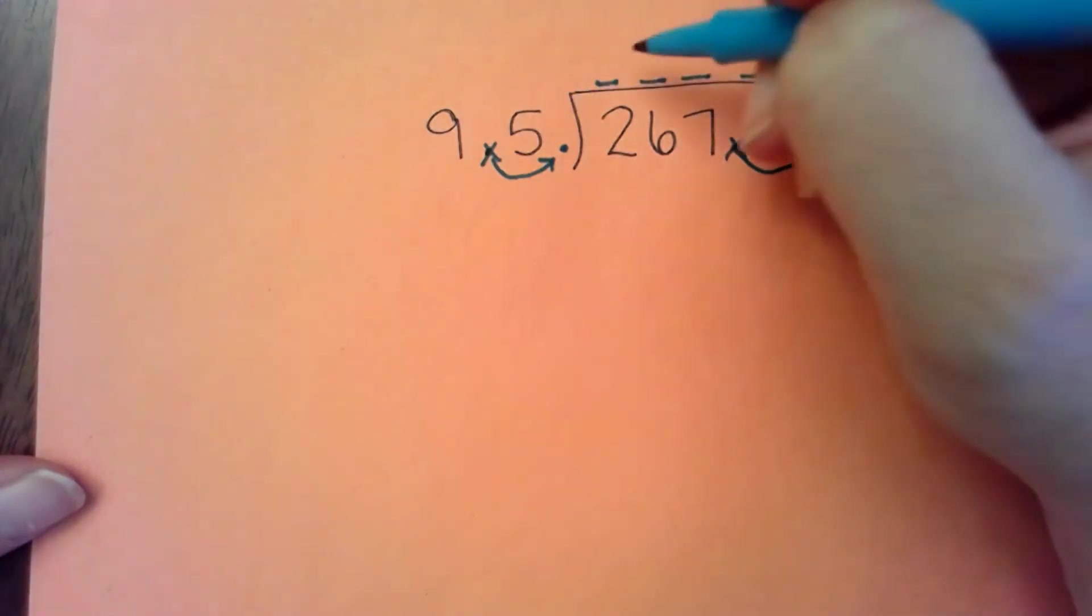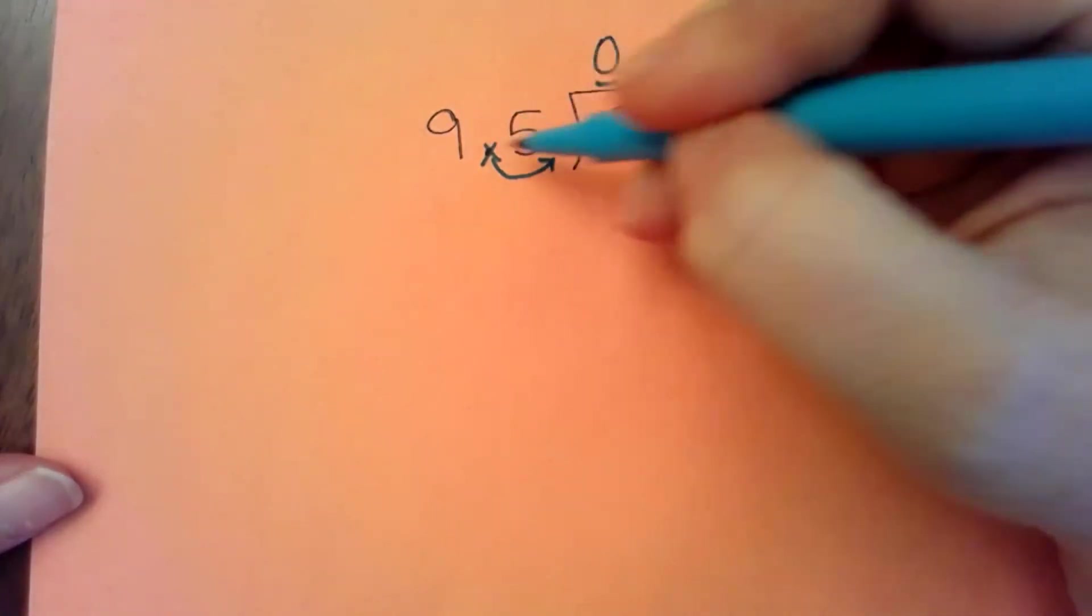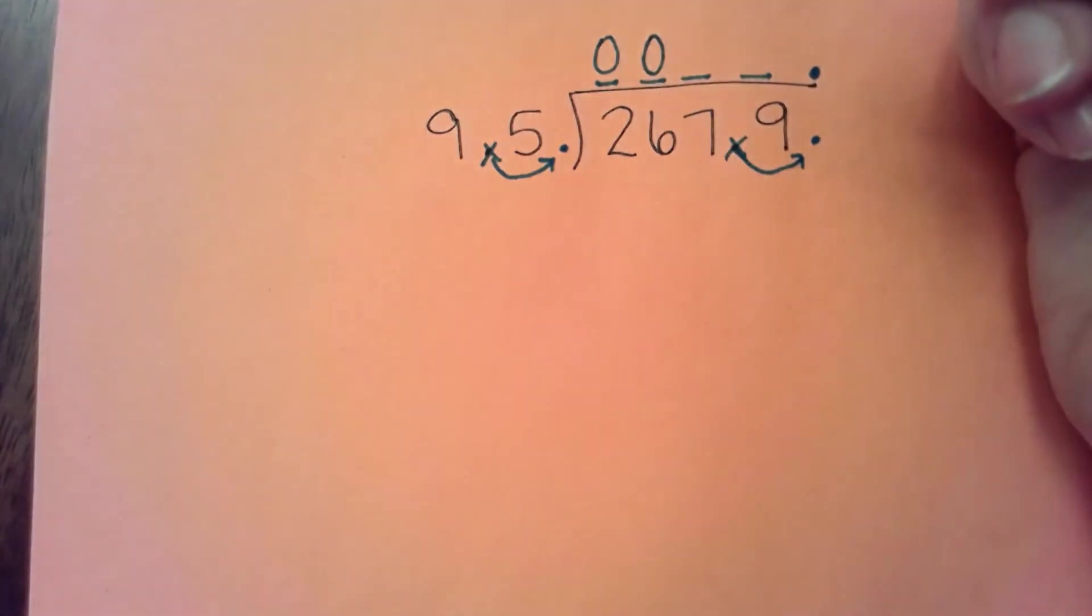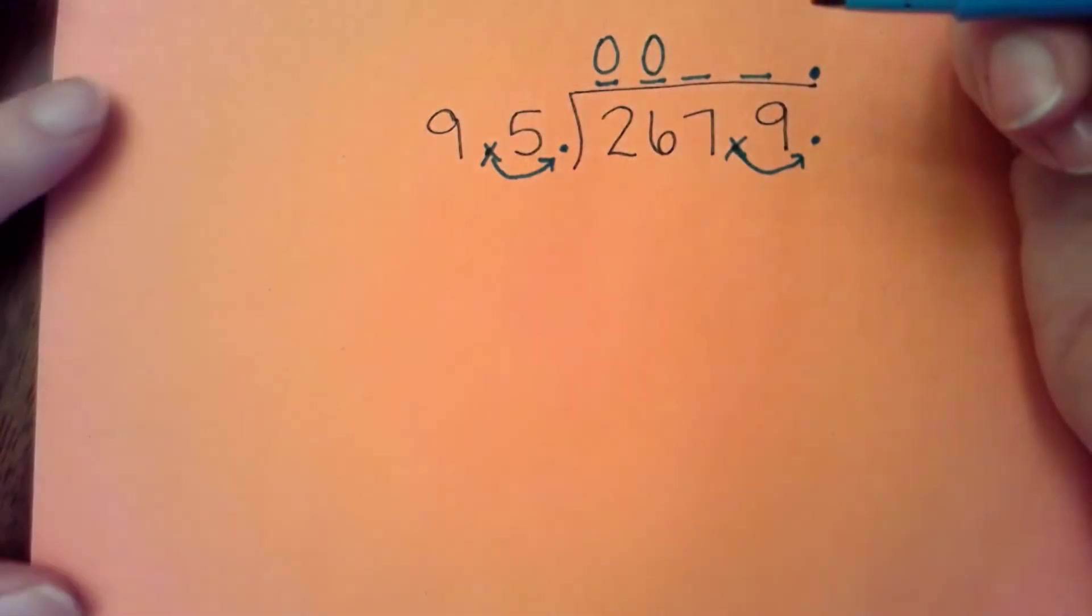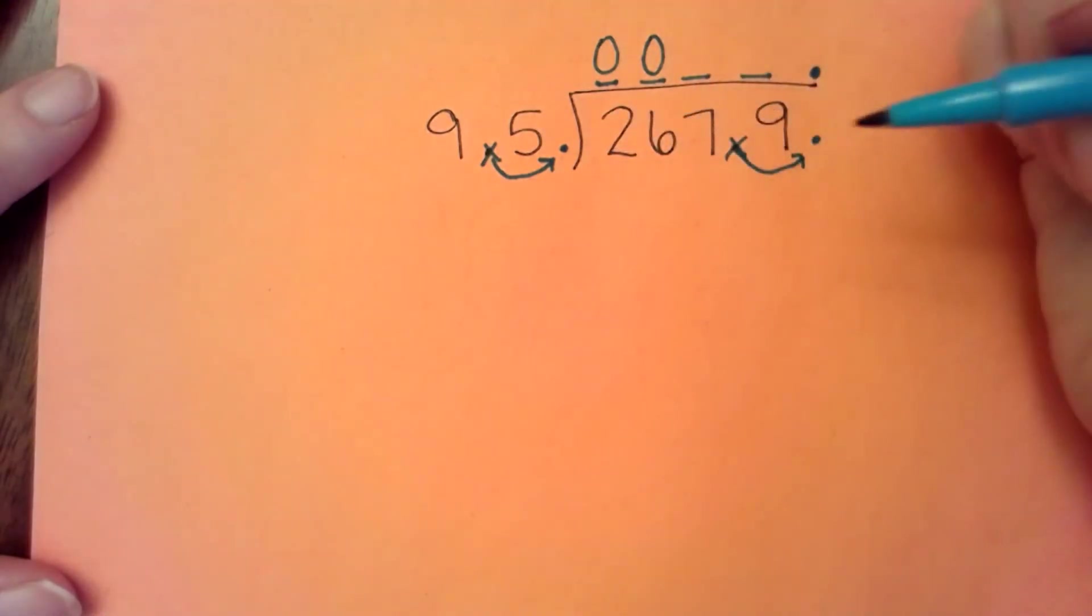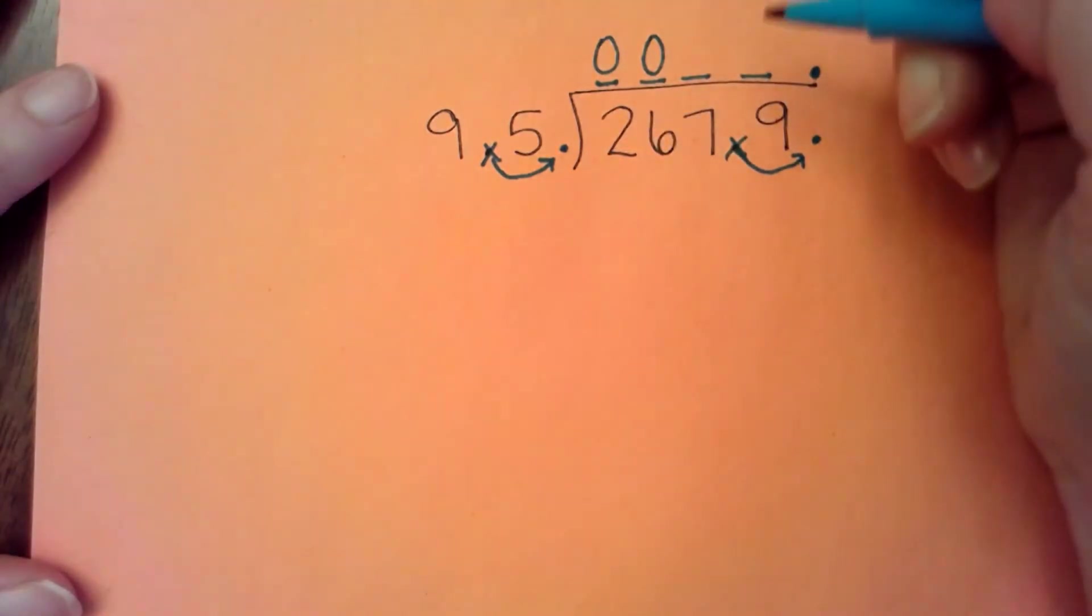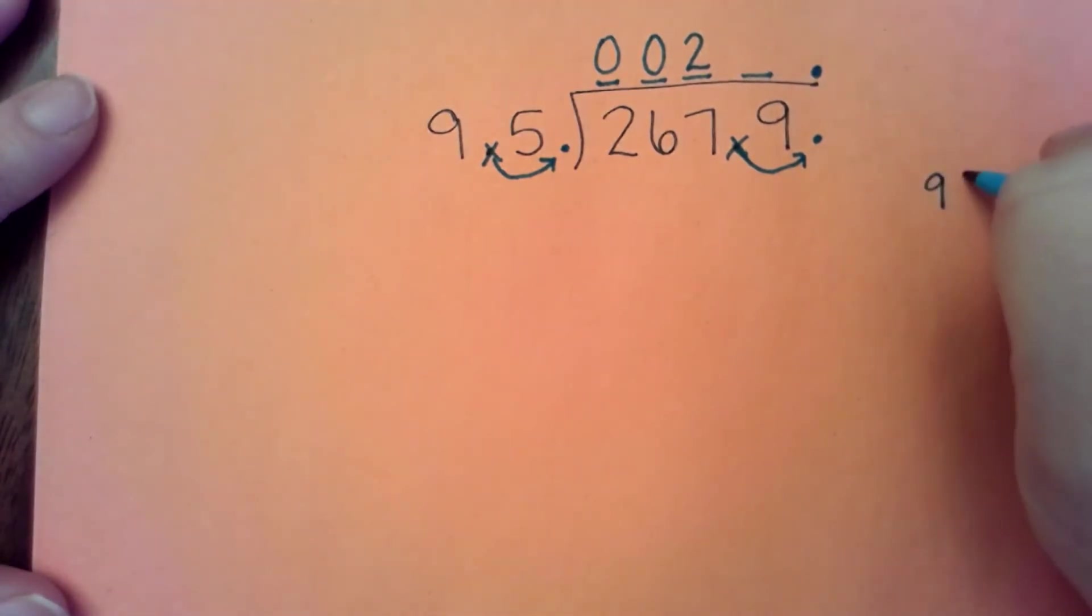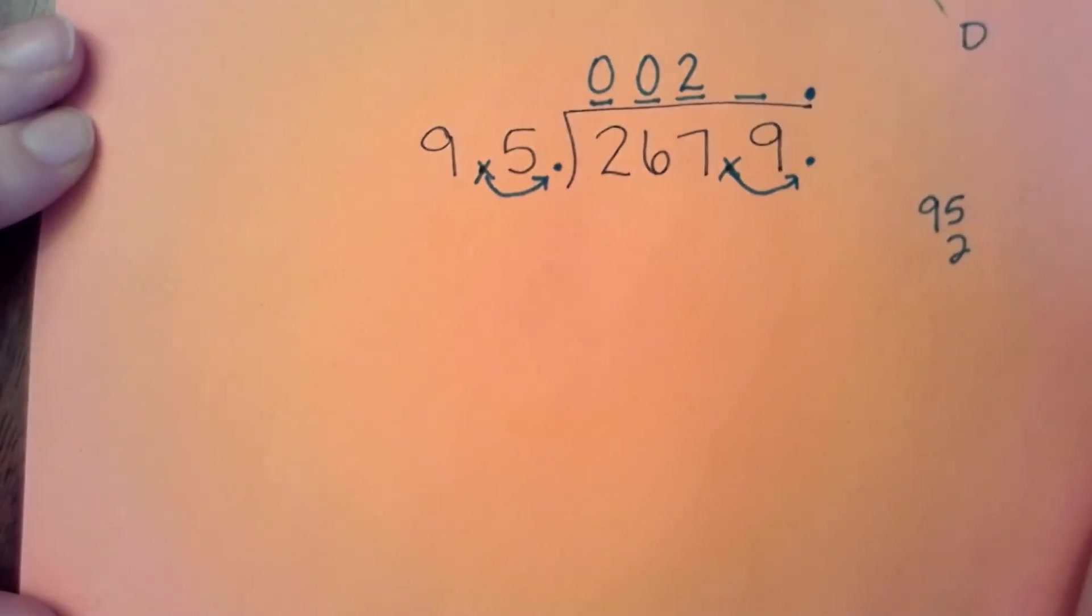95 can't go into 2. 95 can't go into 26. So what I mean is I can't get groups of 95 from 26. But 95 can go into 267. Not exactly sure how many times I didn't memorize my 95 times tables, but I'm thinking 2 sounds like a reasonable number.